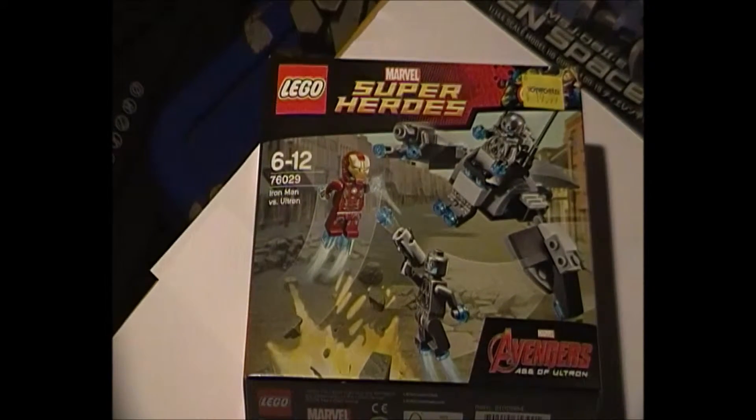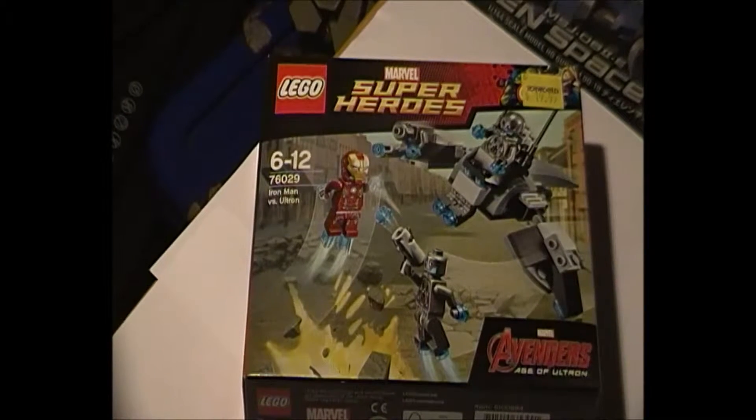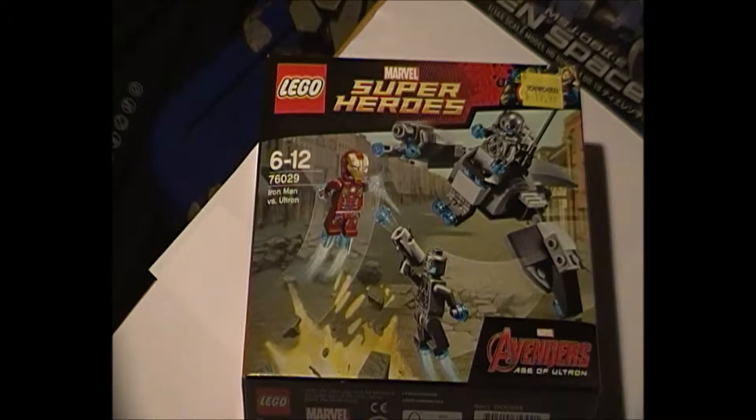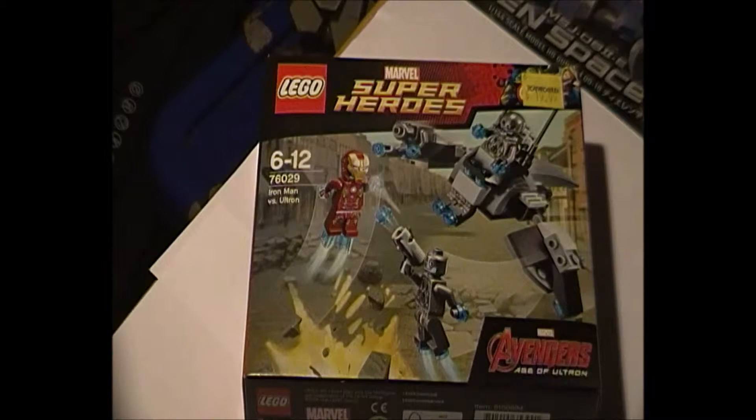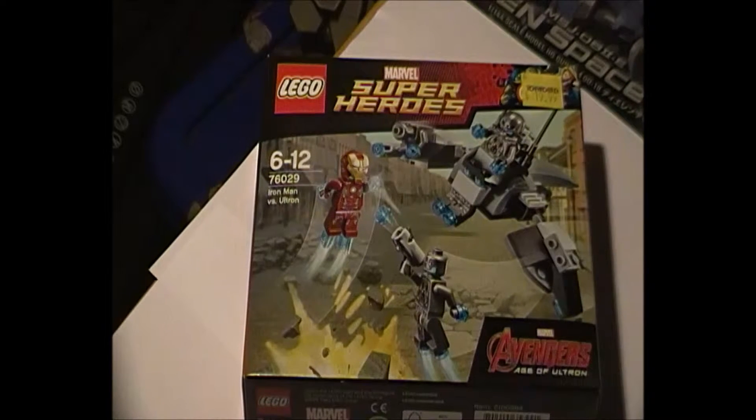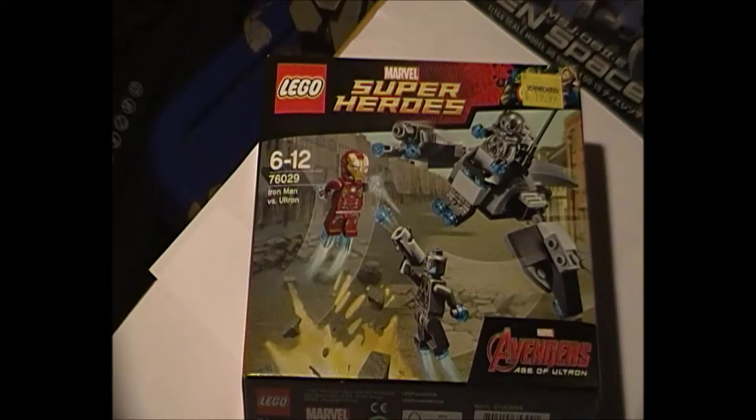It retails in Australia here for about 20 dollars. From the front of the packaging you can see you get the Mark 48 Iron Man armor and three of the Ultrons or Ultron minions. Obviously at the time this video is being shot, the movie is yet to be released, so we don't really know exactly how these work, but we assume they are a variance of the Ultron concept.